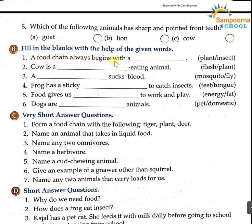A food chain always begins with a plant. Number 2: cow is a dash-eating animal — flesh-eating or plant-eating? Plant-eating. Very good. Herbivore. Number 3: a dash sucks blood — mosquito or fly? Mosquito. Yes, mosquito sucks blood. Aapko machya kaatate hai na? Makkhyaan thodi kaatate hai. Machya kaatate hai. A mosquito sucks blood.